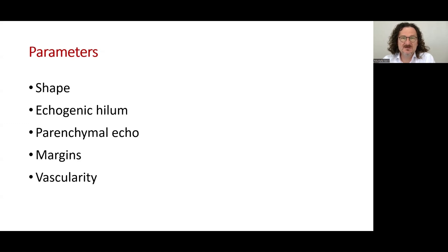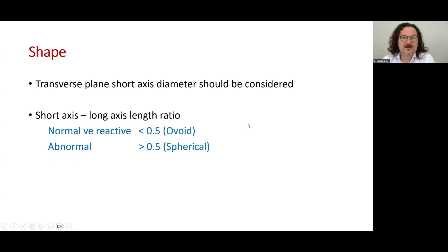There are some parameters being used to characterize the lymph nodes: the shape, hilar ecogenicity, parenchymal echo, margins, and vascularity. The short axis diameter should be considered in the transverse plane. The other parameter is the short axis to long axis length ratio. Most of the time, it's less than 0.5 for normal and reactive lymph nodes, and over 0.5 is considered abnormal.